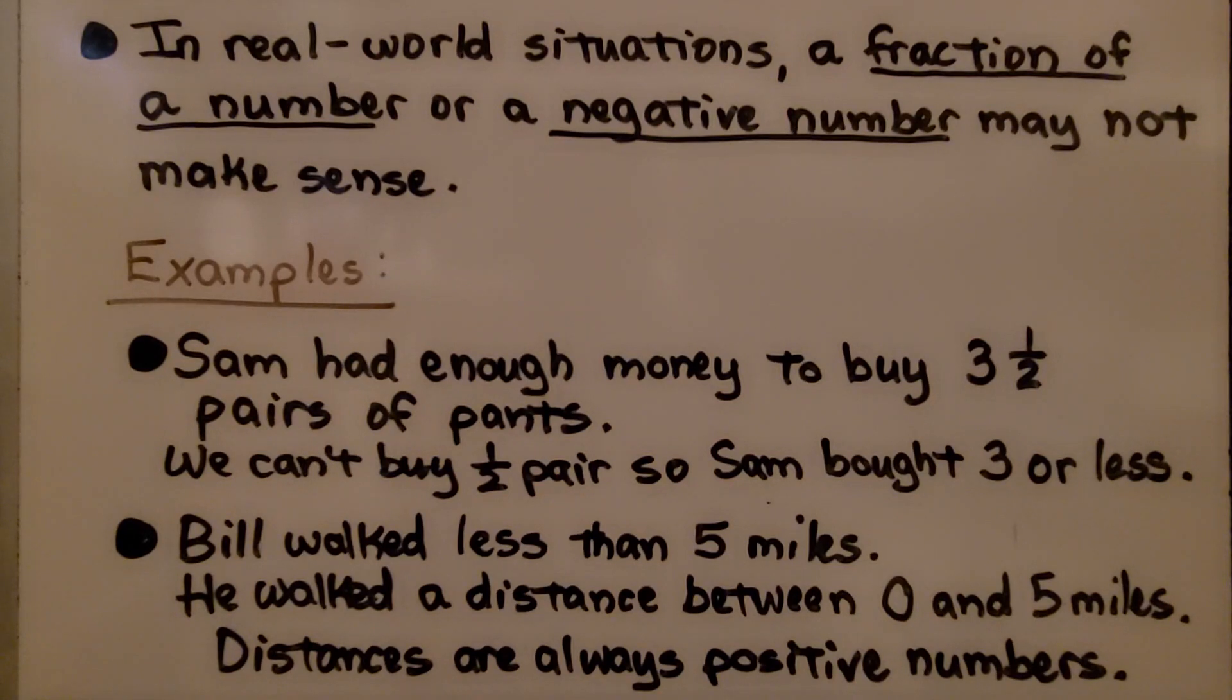Bill walked less than five miles. He walked a distance between zero and five miles. Distances are always positive numbers, so we can't say that Bill walked negative one, which is less than five, but it doesn't make sense because it's a distance, so it would be between zero and five.